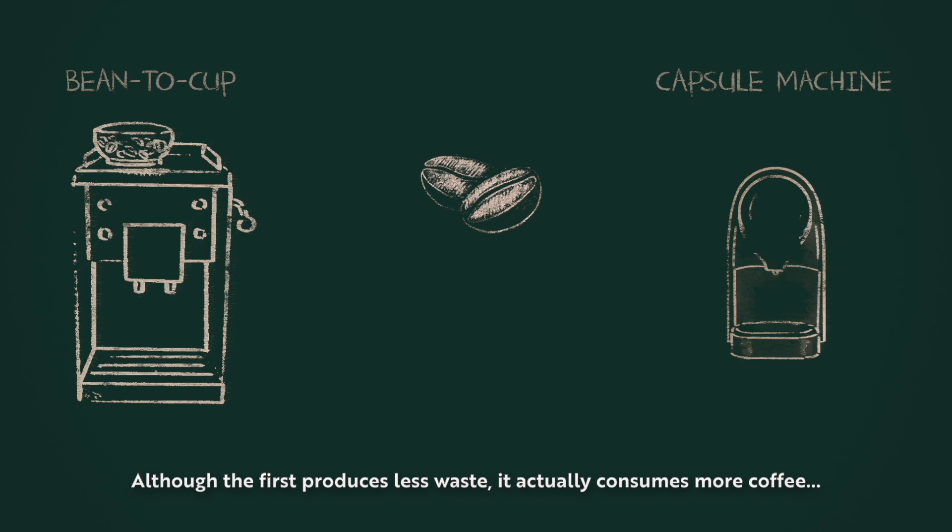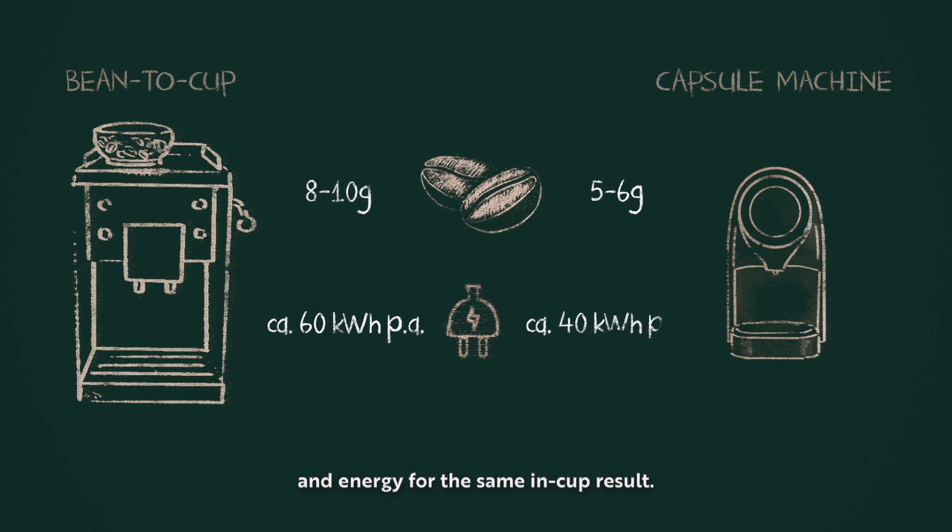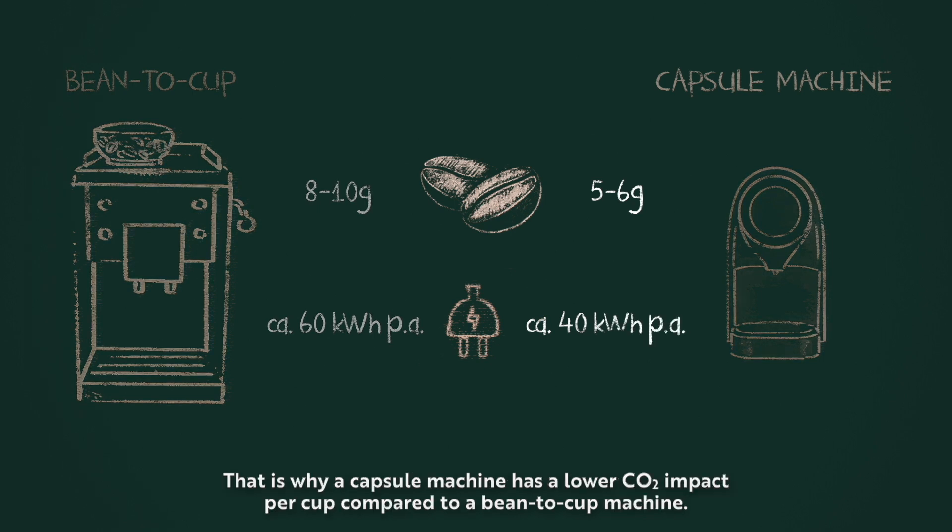Although the first produces less waste, it actually consumes more coffee and energy for the same in-cup result. That's why a capsule machine has a lower CO2 impact per cup compared to a bean-to-cup machine.